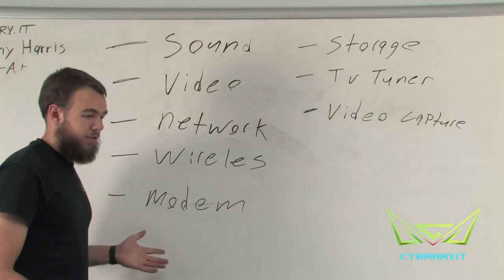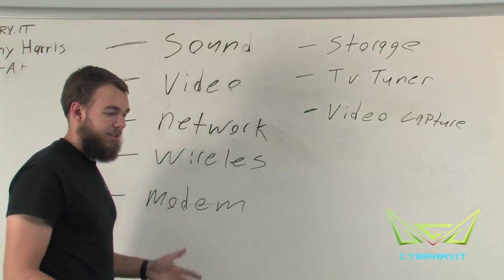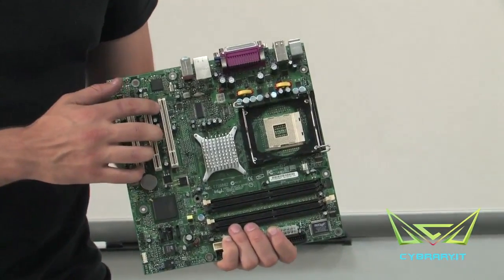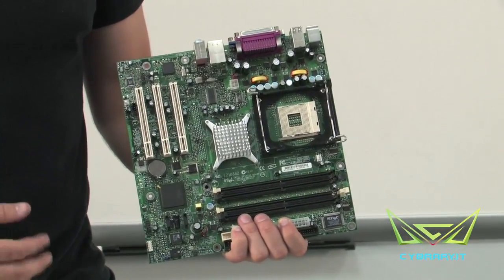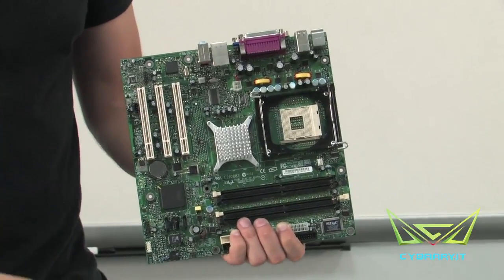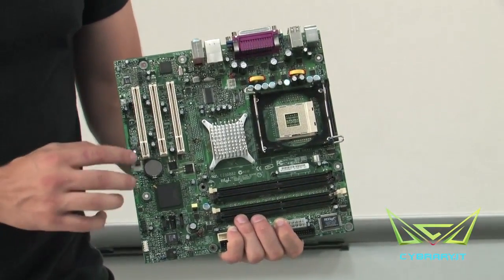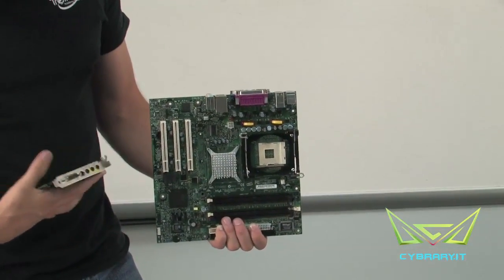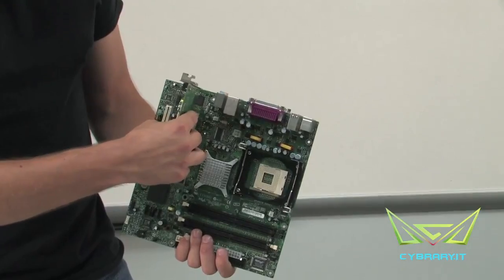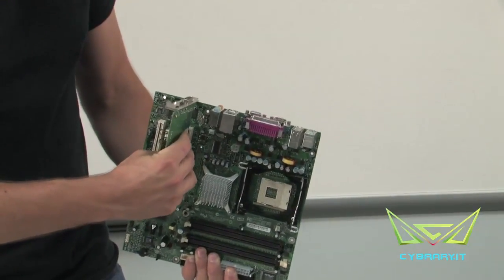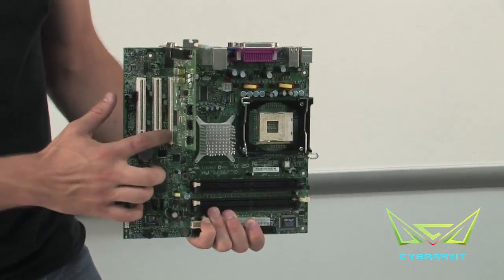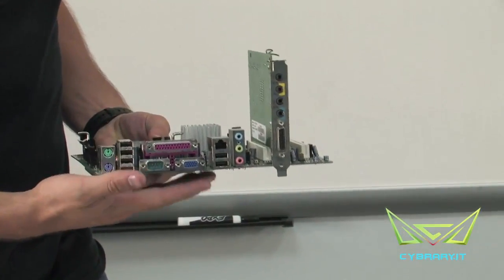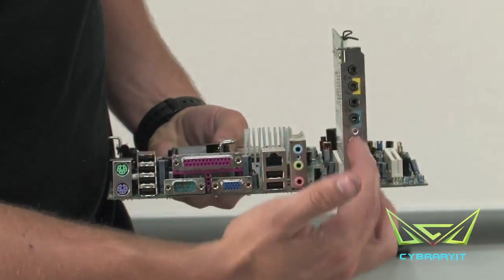Now how do we add and configure these expansion cards? On our motherboard, we'll see we have PCI slots. As we've seen in earlier videos, different motherboards have different numbers of slots and different types of slots. This computer just comes with a standard PCI slot. So for example, if we wanted to install a video and sound card, we could just place that directly into our PCI slot. And now when we have our motherboard installed back into our computer, we'll have those additional ports.